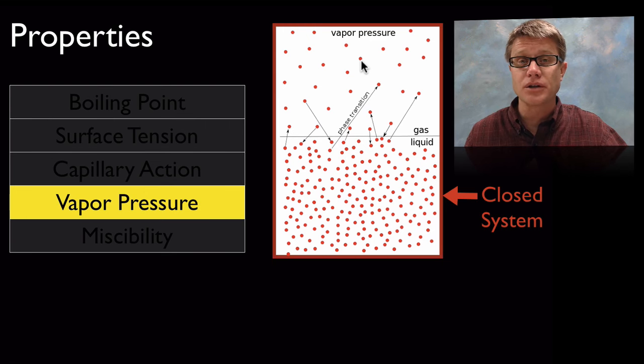The higher that vapor pressure is, the more volatile that liquid is going to be. Alcohol for example is going to have high volatility, and that's because a lot of it is jumping out of this liquid phase into the gas phase because there are low intermolecular forces.